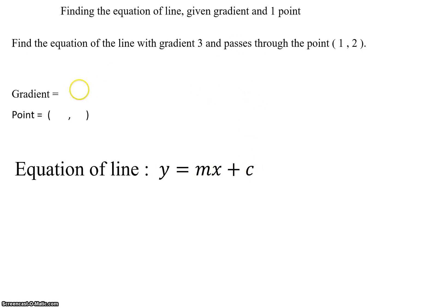Let's fill out the blanks. So gradient in this case is 3, and then the point is (1, 2). I'm just going to jot this down somewhere. Okay, so once I get this info...